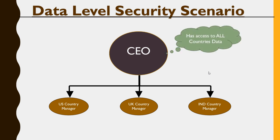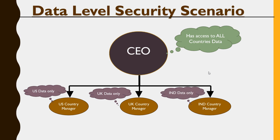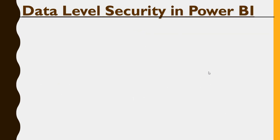The CEO has access to all data across every country. The US manager has access to US data only, the UK country manager has access to UK data, and the India country manager has access to India data only. That is the data segregation we are talking about — and implementing this is the next step: implementing data level security in Power BI.